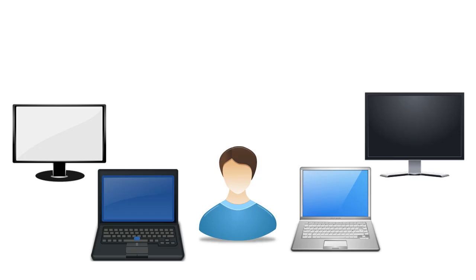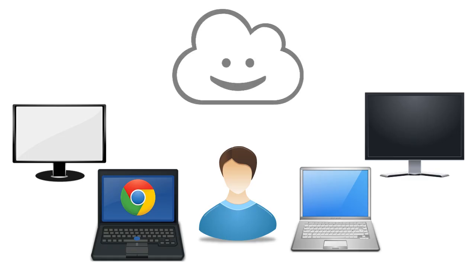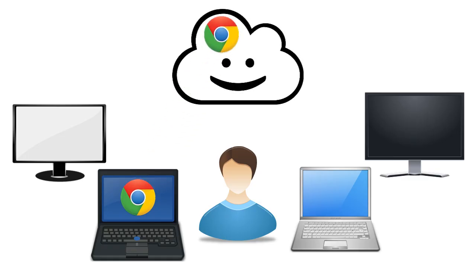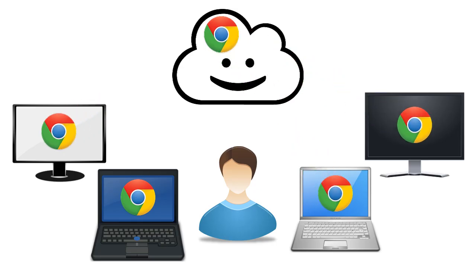With Google Chrome Sync, that's exactly what you can do. All you have to do is sign into your Chrome browser and turn on Chrome Sync. All of your apps, extensions, bookmarks, and settings will all get automatically backed up into the cloud. Then whenever you sign into Chrome on a different computer, your apps, extensions, bookmarks, and settings will all sync down to that computer as well. Let's take a look at how this works.